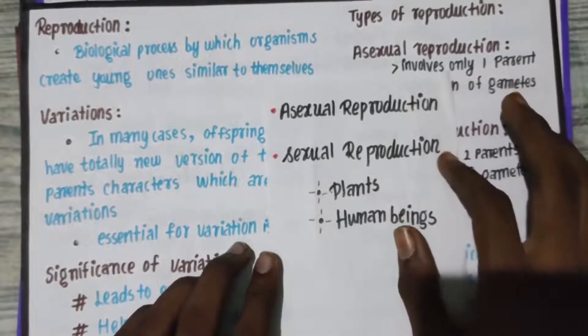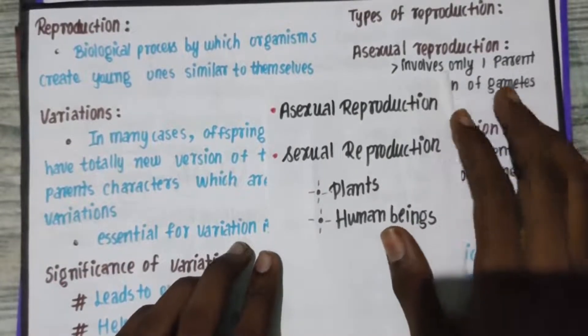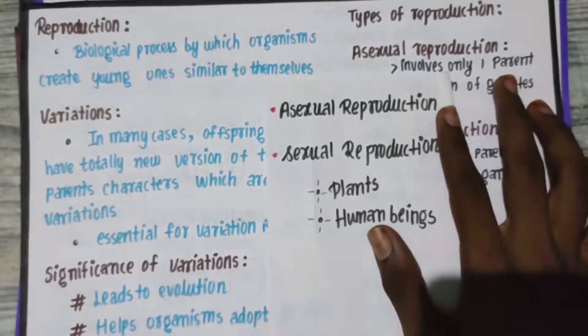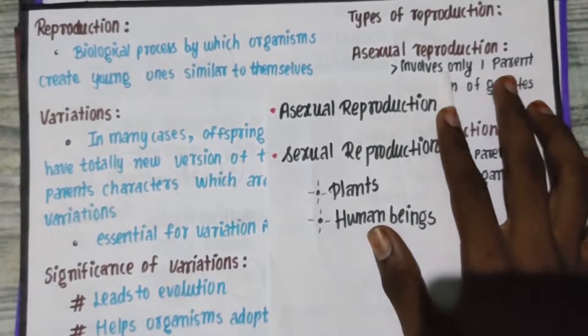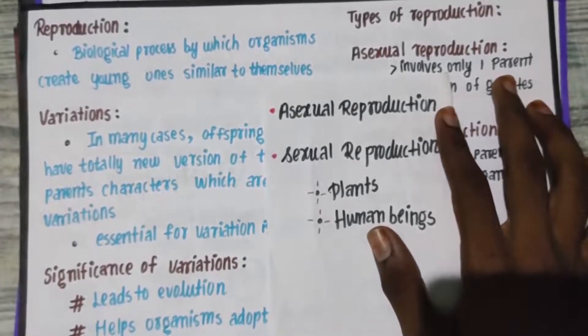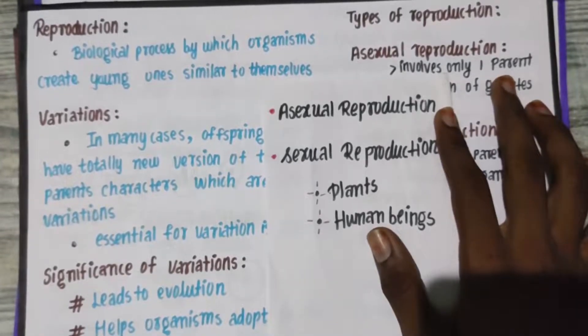We have Asexual Reproduction and Sexual Reproduction. Asexual Reproduction can be of various types: Binary Fission, Budding, Fragmentation, Regeneration, and Vegetative Propagation.